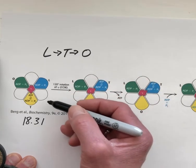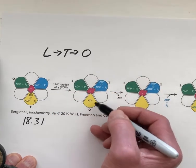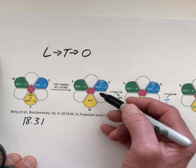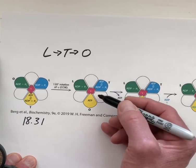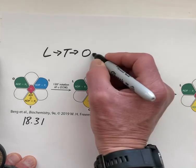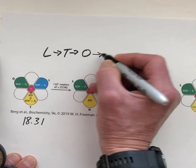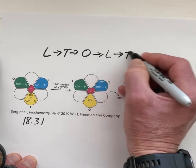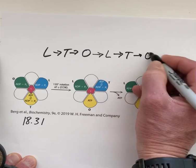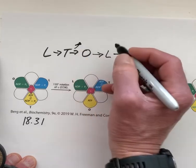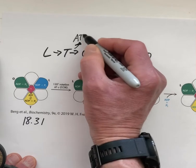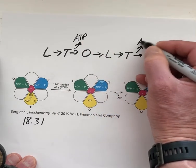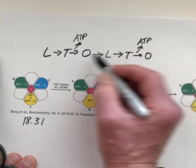This is driven by rotations of the gamma subunit, depending on which portion is pointing at which beta subunit. This is a circular motion. After the O state, you go back to the L state, then T state, then the O state. Everywhere you go from T to O, we release the ATP. The ATP is being ejected at these transitions.